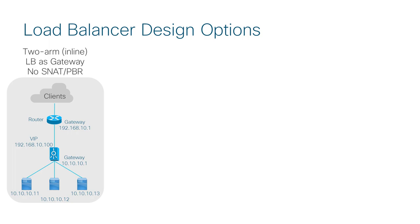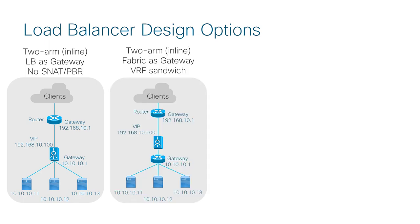The first example is load balancer as the gateway of servers. In this case, return traffic goes through the load balancer without source NAT or PBR. The second example is router or switch as the gateway of servers, but the load balancer is not directly in the routing path. In this case, source NAT or PBR is required to make return traffic go through the load balancer.